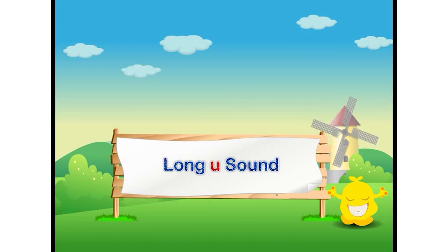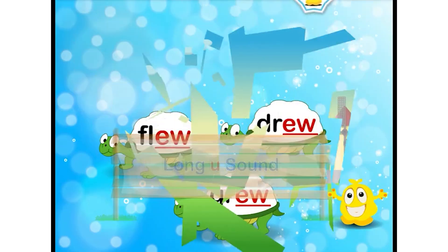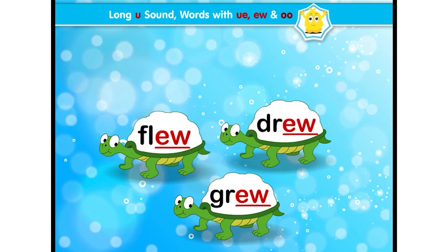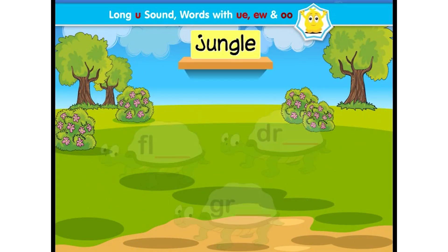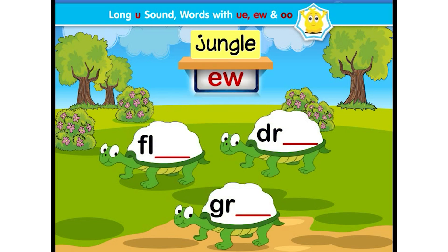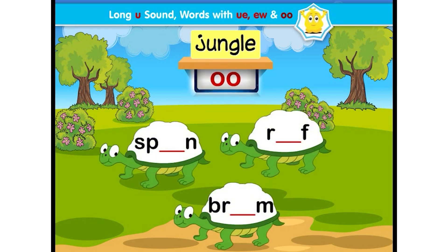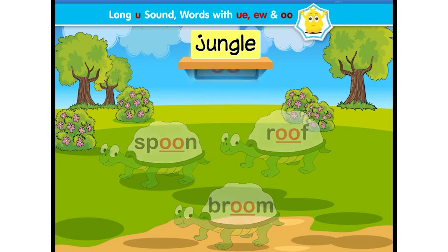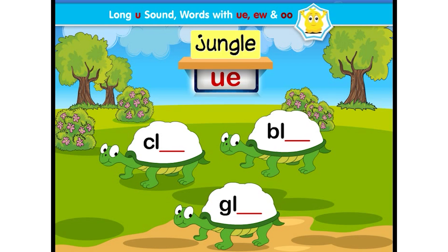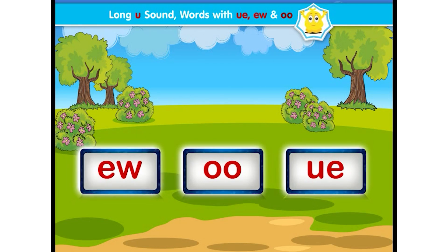Long vowel U sound. It's time to learn about long vowel U sound. Do you want to meet a tortoise who carries words on his shell? Let's go to the jungle. This is the E-W tortoise who carries words like flew, drew, grew. Now it's the O-O tortoise who carries words like spoon, roof, broom. That's the U-E tortoise who carries words like clue, blue, glue. So letters E-W, double-O, and U-E have a similar long vowel U sound.